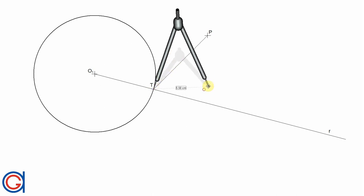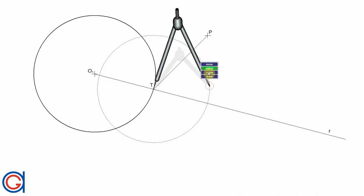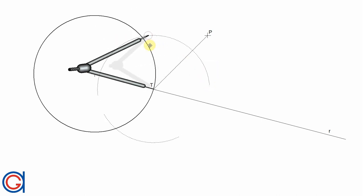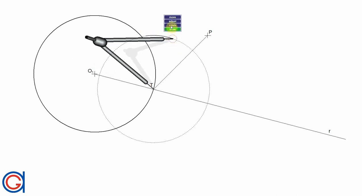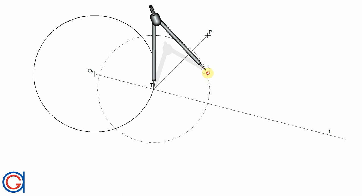So setting the compass on T and with a radius slightly longer than half the length of the line segment TP, we are going to describe an arc to the left and to the right of the line as can be seen here in the video.